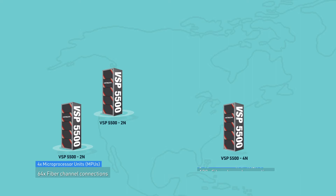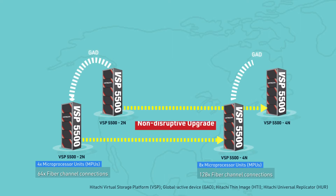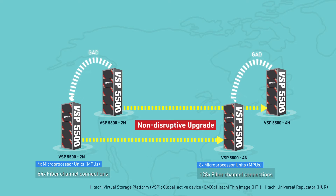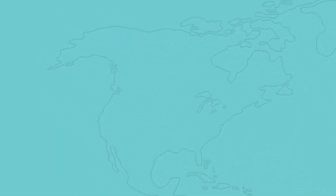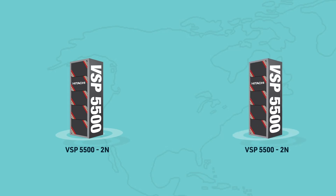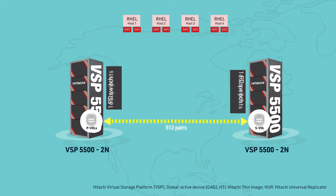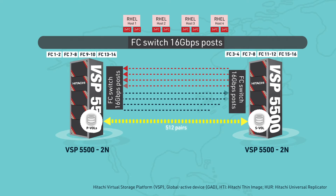We conducted this evaluation to verify that the scale-out of the VSP5500 could be done non-disruptively with an active global active device or GAD configuration in place. This was the configuration before the scale-out with the two VSP5500 two-node models. The number of GAD pairs was 512.